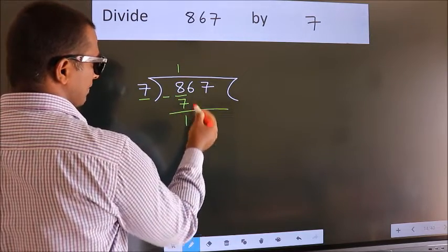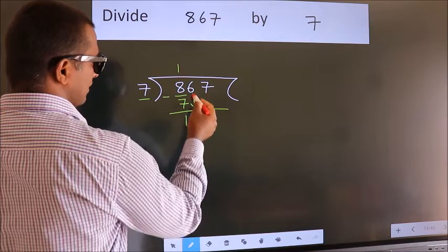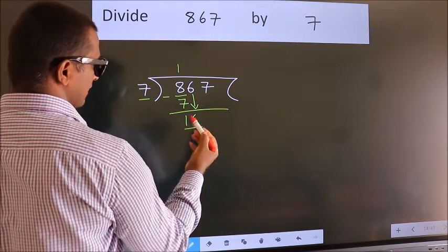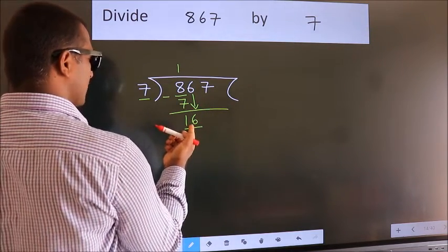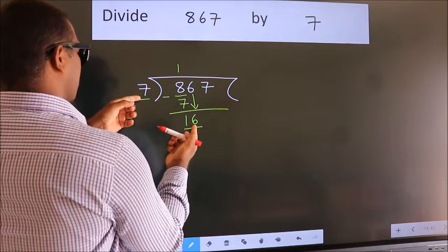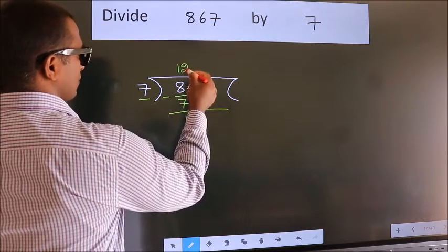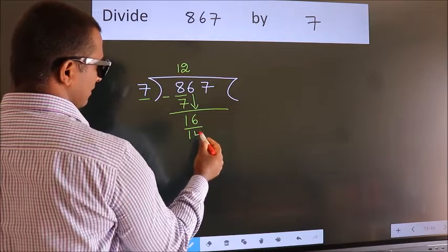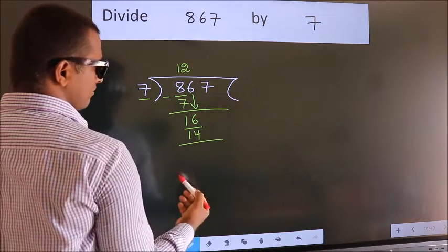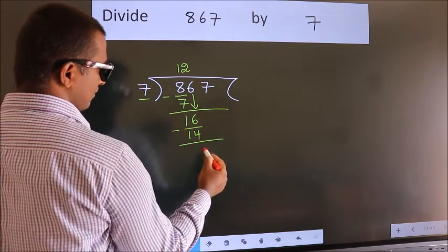After this, bring down the next number. So 6 down, making 16. A number close to 16 in the 7 table is 7 twos, which is 14. Now we subtract and get 2.